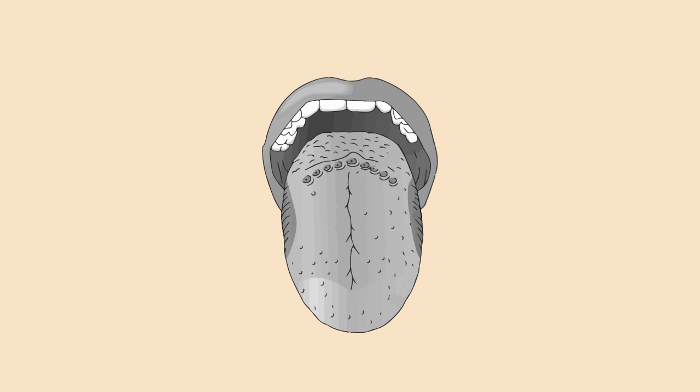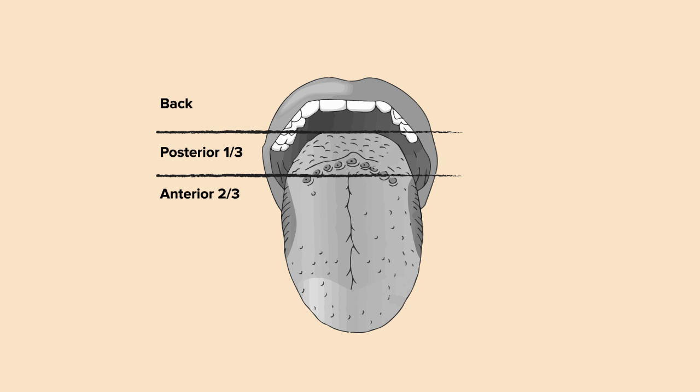Looking at the tongue this way, this is how we will divide it. Each section of the tongue will be innervated by cranial nerves responsible for taste, general sensation, and motor function.